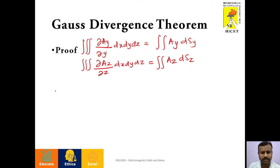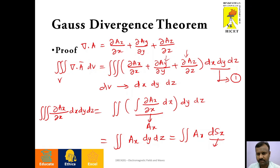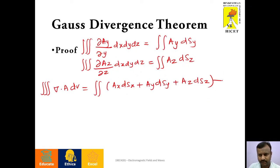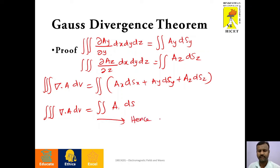The triple integral of ∂A_y/∂y dx dy dz equals the surface integral of A_y ds_y. Similarly, the triple integral of ∂A_z/∂z dx dy dz equals the surface integral of A_z ds_z, the z component of the surface area. If we substitute the individual terms into equation number 1, we get the triple integral of the divergence of the vector field equals the double integral of (A_x ds_x + A_y ds_y + A_z ds_z). On simplification, the x, y, z components can be combined to represent the entire vector A dot ds. Thus the volume integral is equated to the surface integral. This is the proof of Gauss Divergence Theorem.